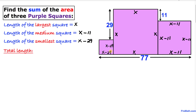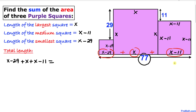Now let's calculate the total length of all three squares. Adding them up: the small square is x minus 29, plus the large square x, plus the medium square x minus 11. We know the combined length equals 77, so we set x minus 29 plus x plus x minus 11 equal to 77. Simplifying the left-hand side gives us 3x minus 40 equals 77.